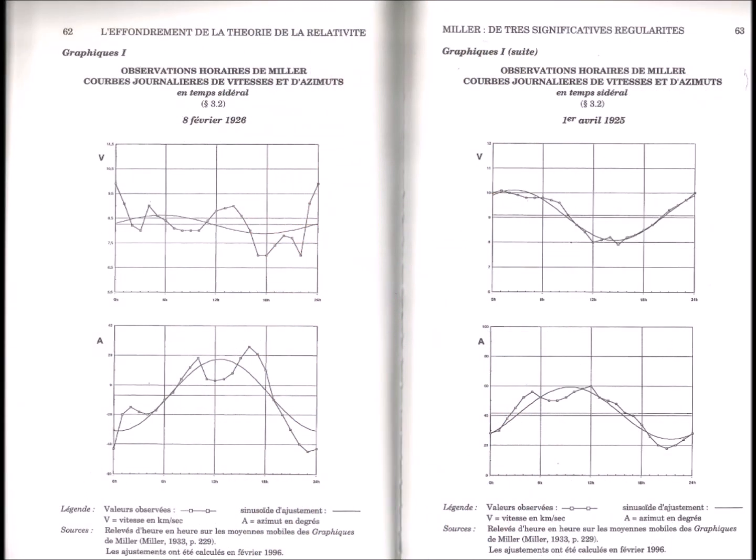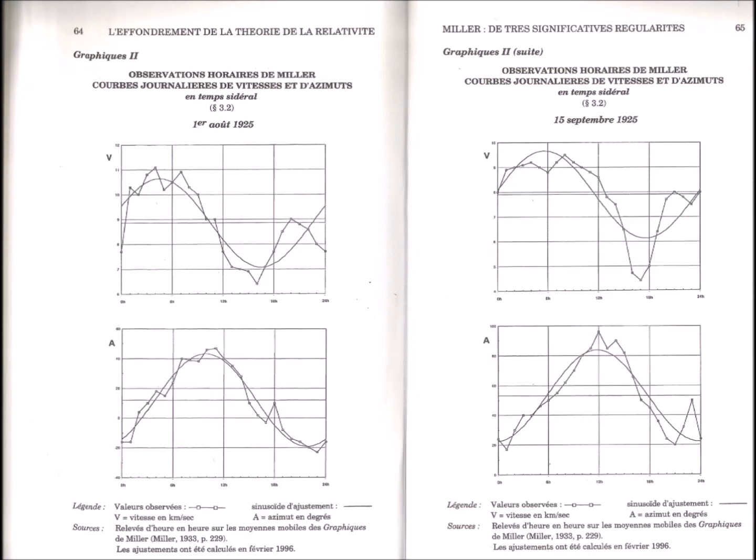His statistical calculations showed unambiguously that the speeds obtained by Miller showed a correlation with the respective positions of the Earth, the Moon, and the Sun.